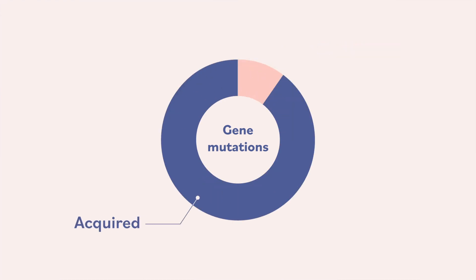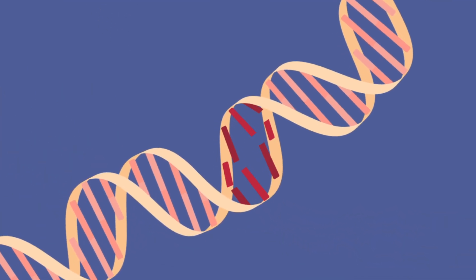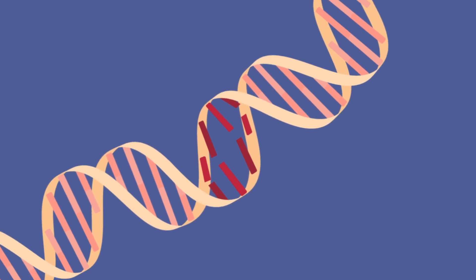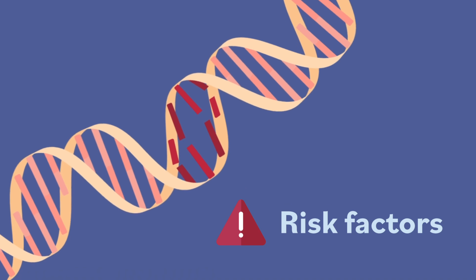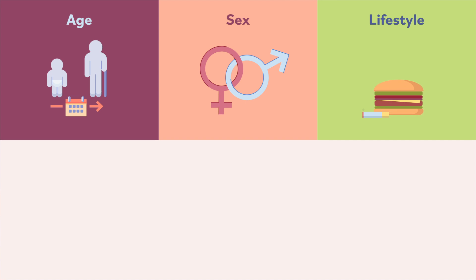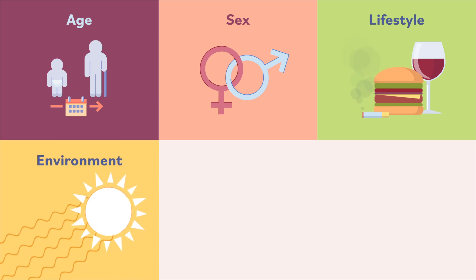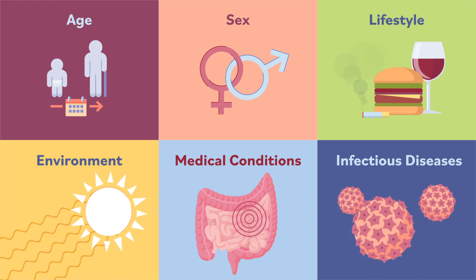The rest are acquired mutations, which can be caused by anything that damages genes throughout a person's lifetime. Things that damage genes and cause cancer are called cancer risk factors. Examples of cancer risk factors are age, your sex, lifestyle factors such as smoking, eating an unhealthy diet, or drinking alcohol, exposure to cancer-causing agents in the environment such as UV rays from the sun or radon gas, and medical conditions such as Crohn's disease and certain infectious diseases such as HPV.